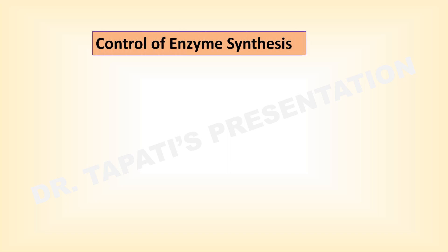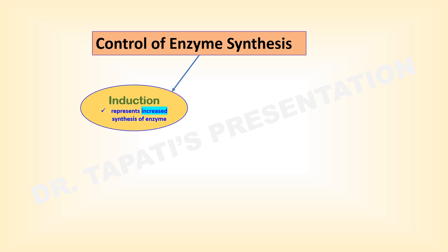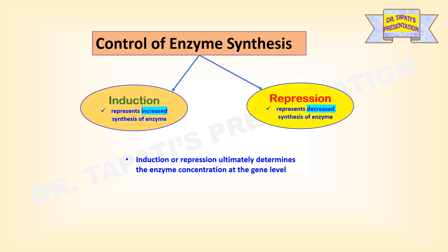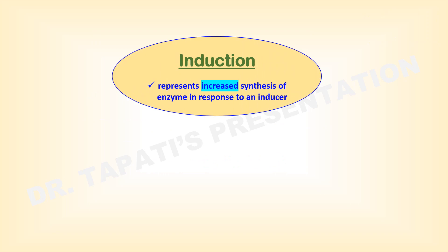The synthesis of enzymes, which are proteins, is regulated by the genes. Therefore enzyme synthesis is controlled by induction or repression, which ultimately determines the enzyme concentration at the gene level. Induction represents increased synthesis of an enzyme in response to an inducer; the inducer may be a substrate or a hormone.